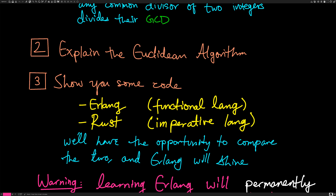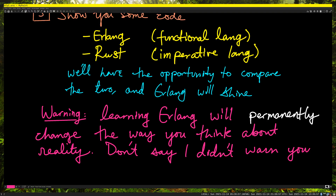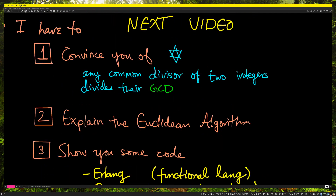I want to give you a warning: learning Erlang will permanently change the way you think about reality. And when you have your childhood innocence cracked about concurrency, don't say I didn't warn you. Alright, that's all I have for now — next video we'll prove the starred point, explain the Euclidean algorithm, and I'll show you some code. There's a GitLab at gitlab.com/DoctorAJKumar/QAL — I'll try to remember to link it below. See you in the next video.